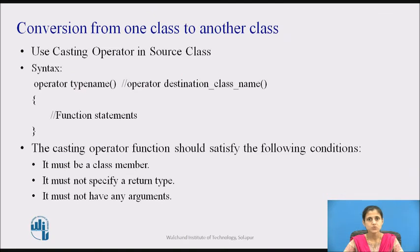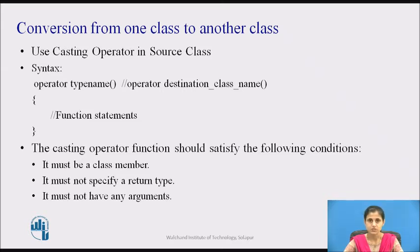We should make use of a casting operator function in the source class. In the case of conversions between objects, the type name refers to the destination class. Therefore, when a class needs to be converted, a casting operator function can be used. The conversion takes place in the source class and the result is given to the destination class object.